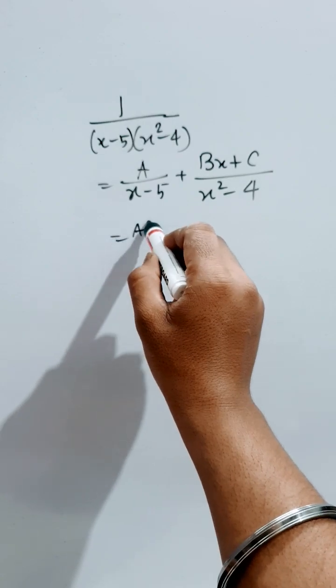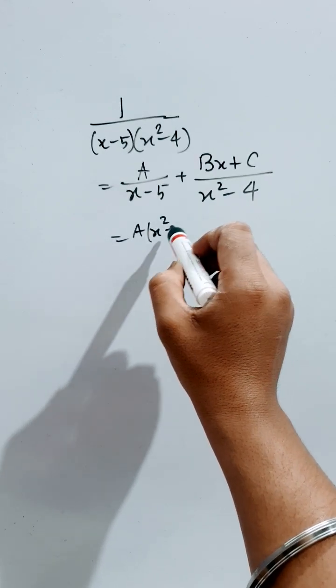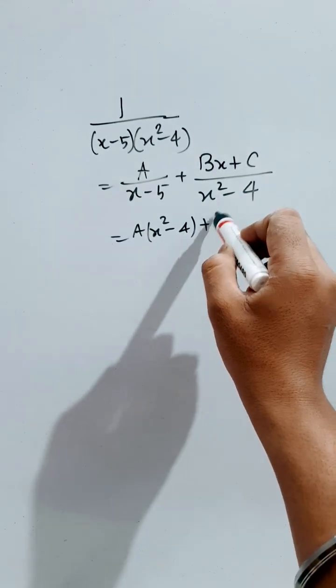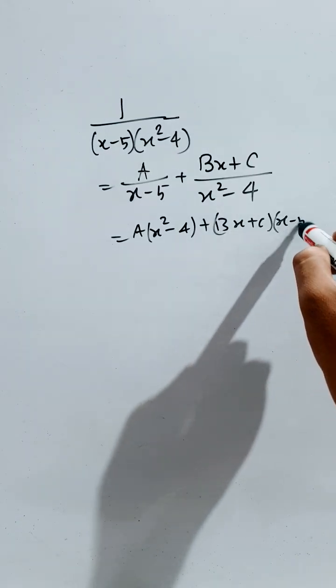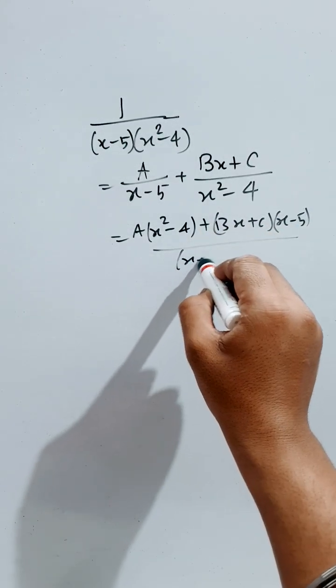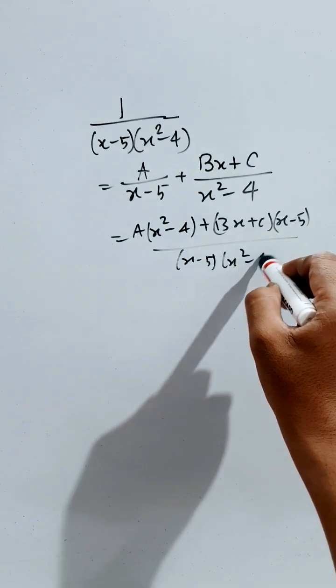Now, we have to take the LCM that is x square minus 4 into A plus Bx plus C into x minus 5 divided by x minus 5 into x square minus 4.